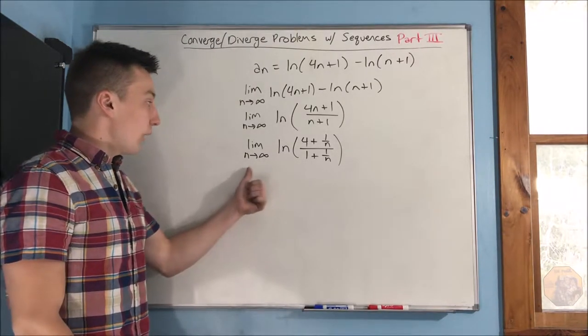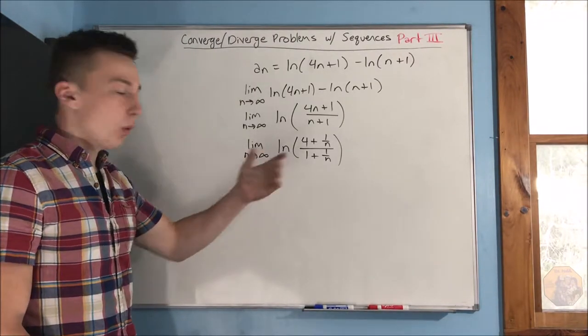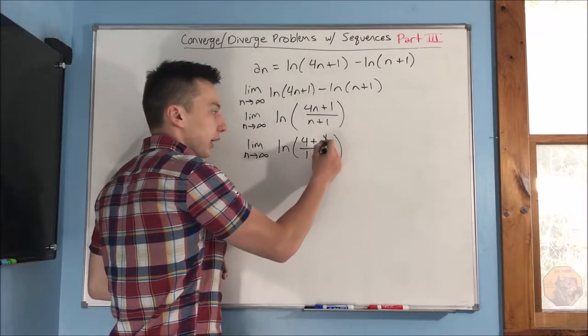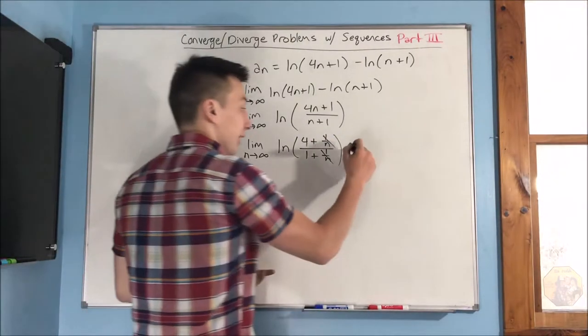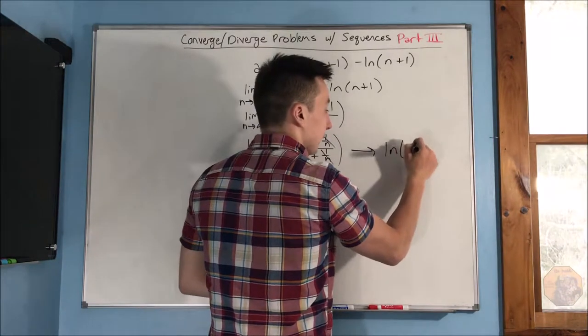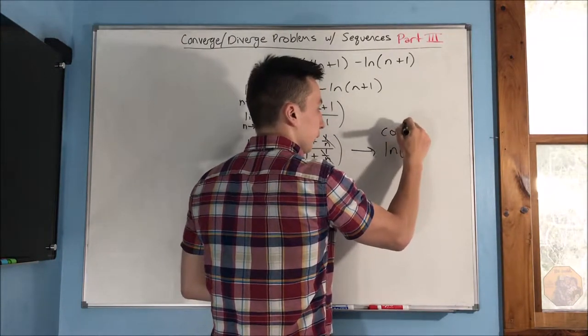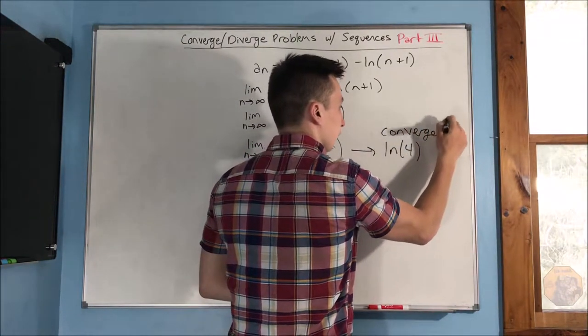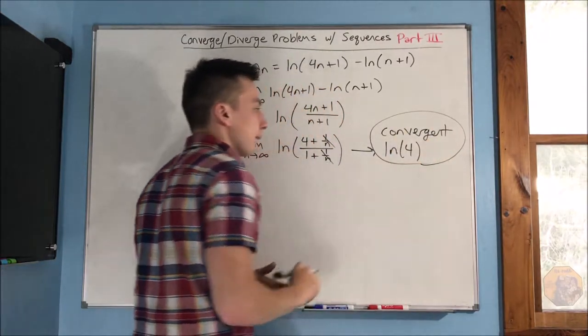Well, since we have that limit as n approaches infinity, 1 over n's, those are going to go away. Those are just going to become 0. So we're just left with natural log of 4, which means that this sequence is convergent.